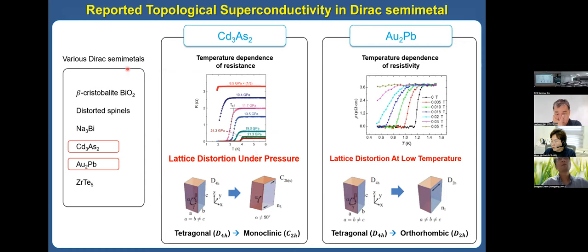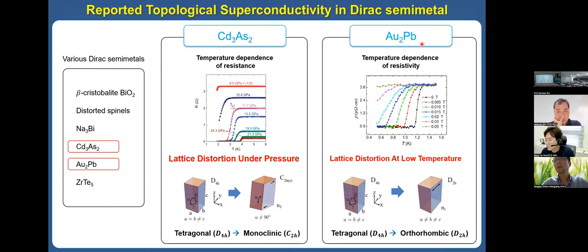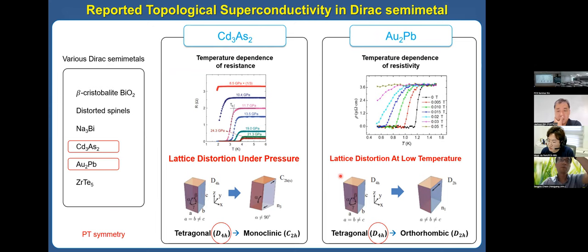Is that all? We also wanted to consider the effect of lattice distortion. As discussed before, there are many lattice distortion methods. Cadmium arsenide and Au₂Pb show topological superconductivity under lattice distortion. So we have studied the effect of lattice distortion in this system.